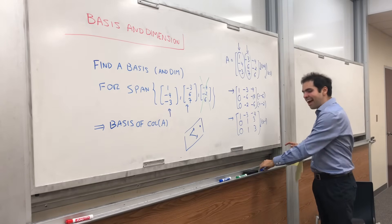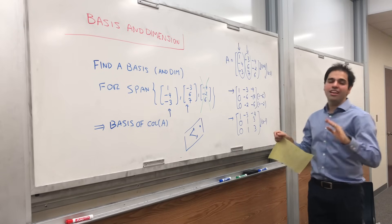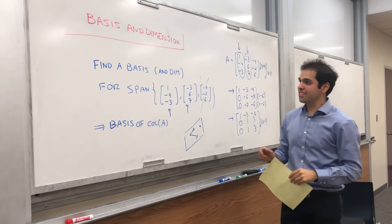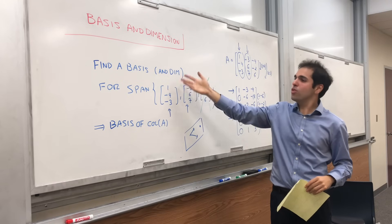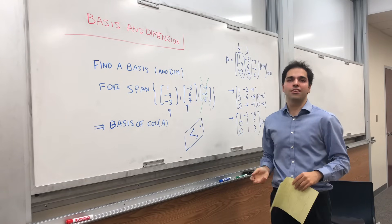As I said, I think this is a very powerful technique. Just this row reduction and figuring out where the pivots are, because it allows us to answer more abstract questions, like finding the basis or dimension of a subspace.